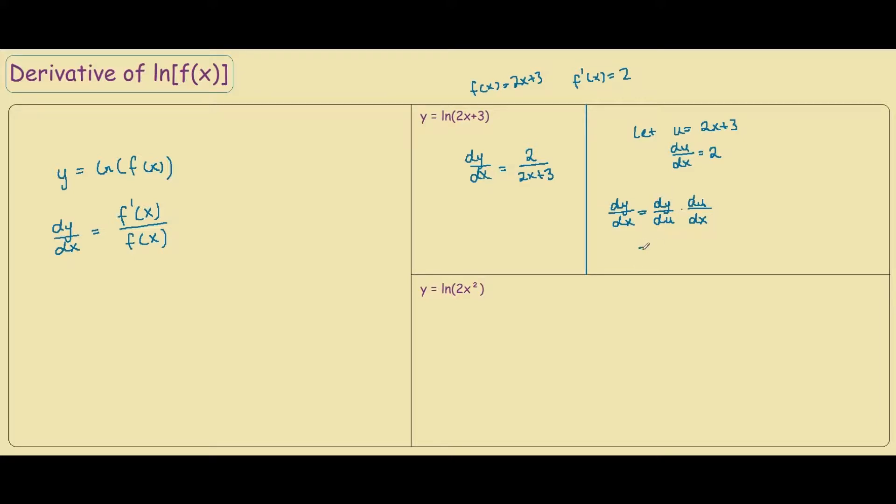So if we had dy/du and we know that y equals ln of u because we replace the 2x plus 3 with u, then we know dy/du is also equal to 1 over u.